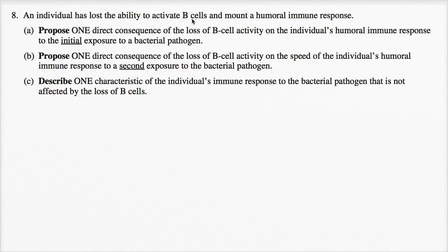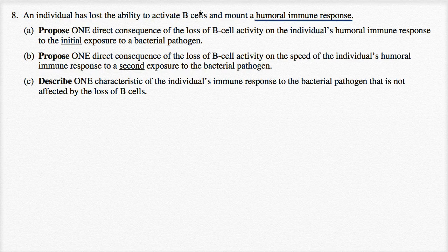As a reminder, a humoral immune response is one that involves antibodies. B cells are the ones that recognize an antigen — something the body doesn't want. In response to those antigens, B cells will proliferate and differentiate into plasma cells that produce antibodies, which tag the antigens for cleanup. They can also differentiate into memory B cells so that next time the same antigen shows up, the body can mount a faster response.